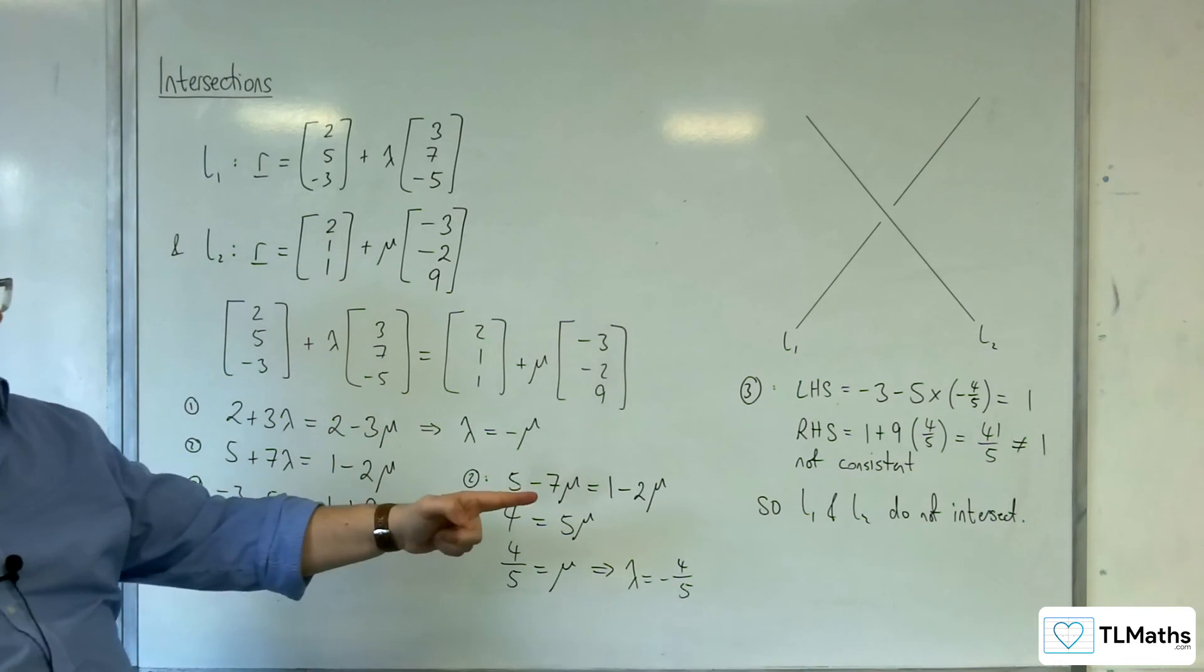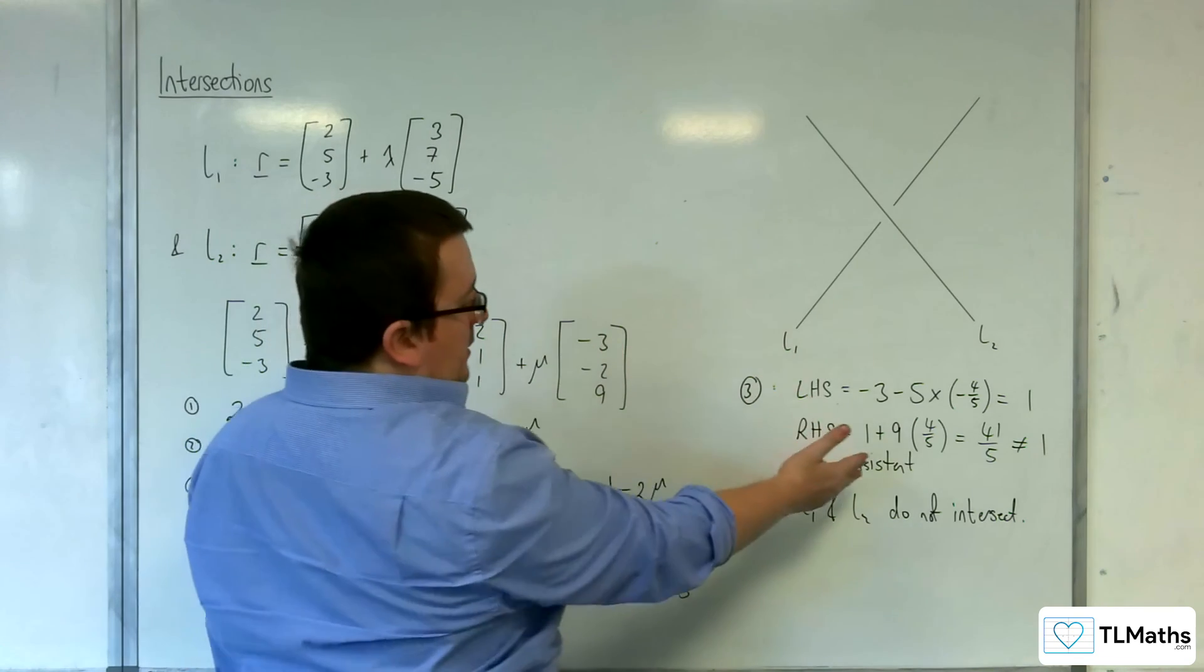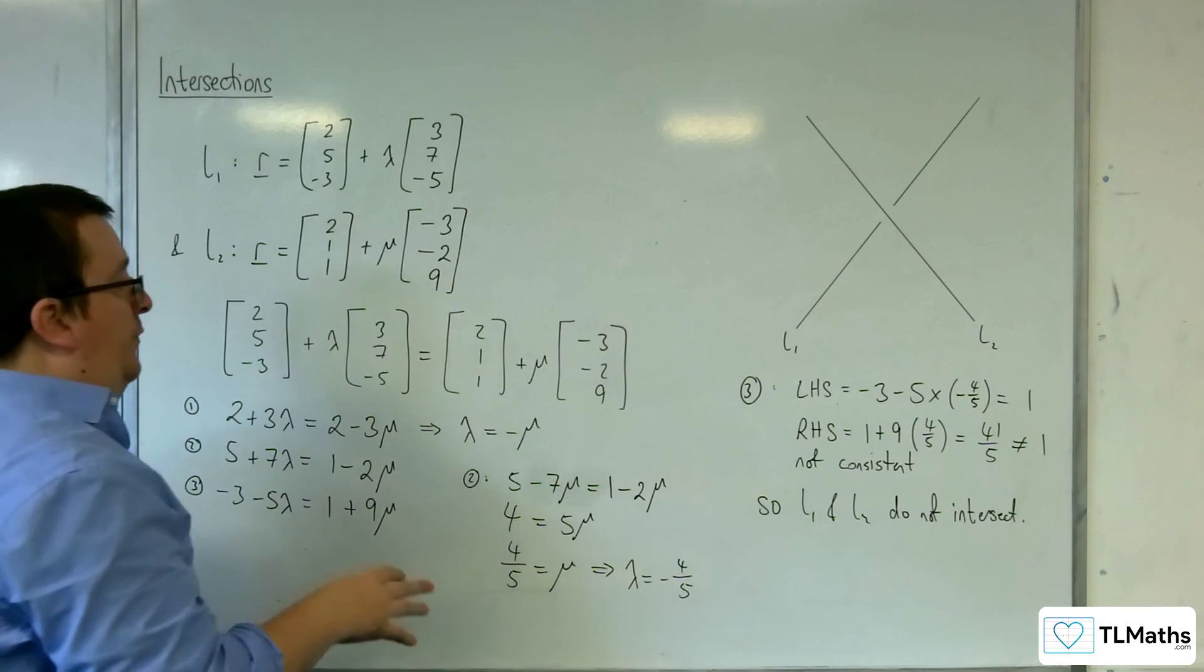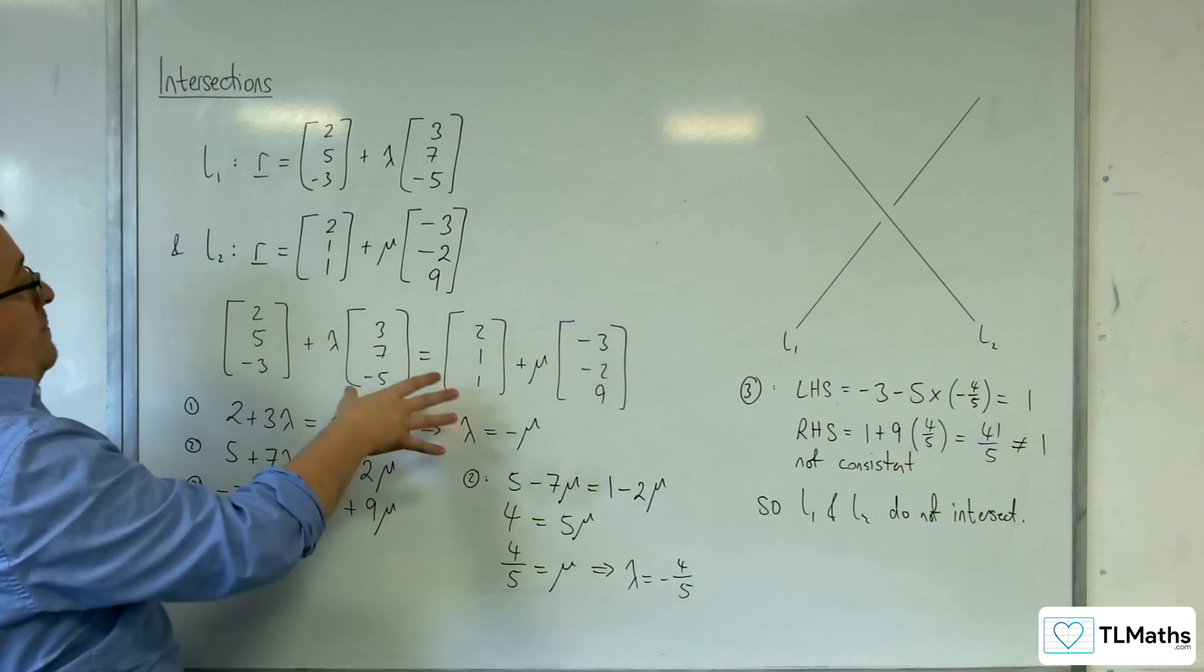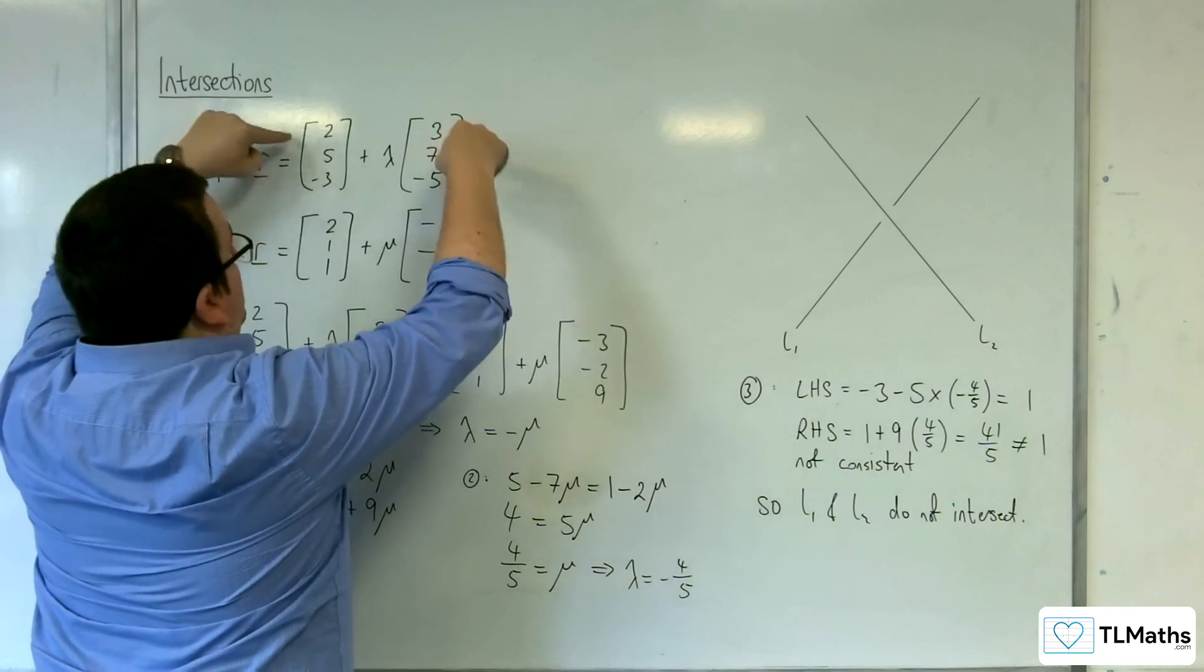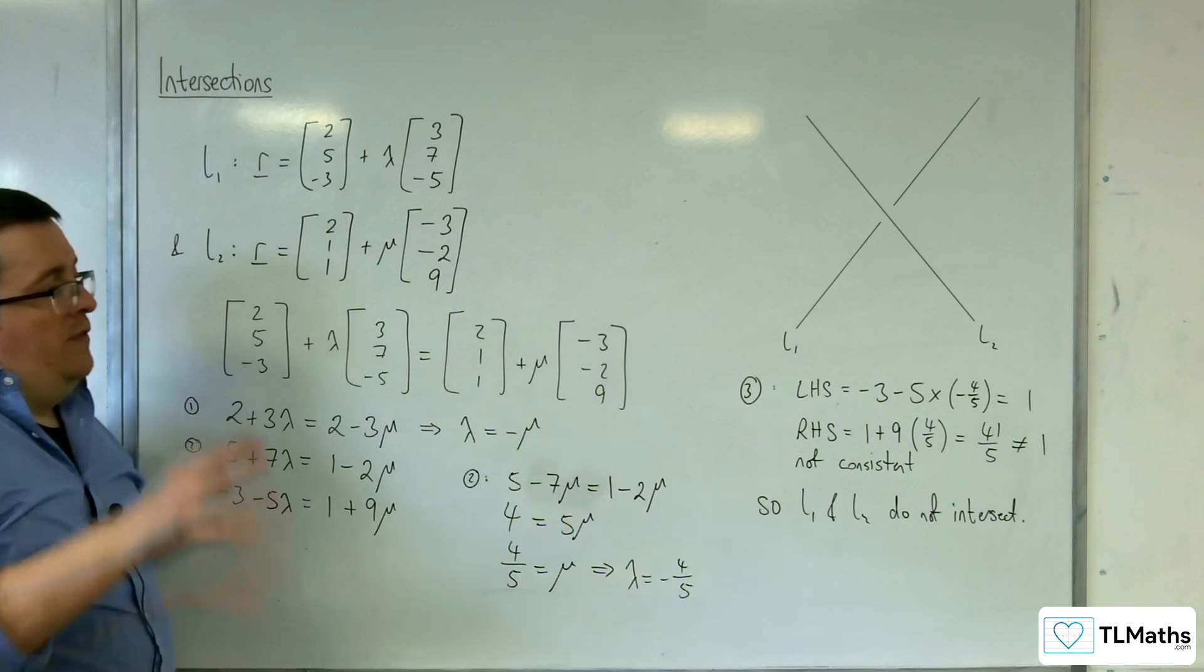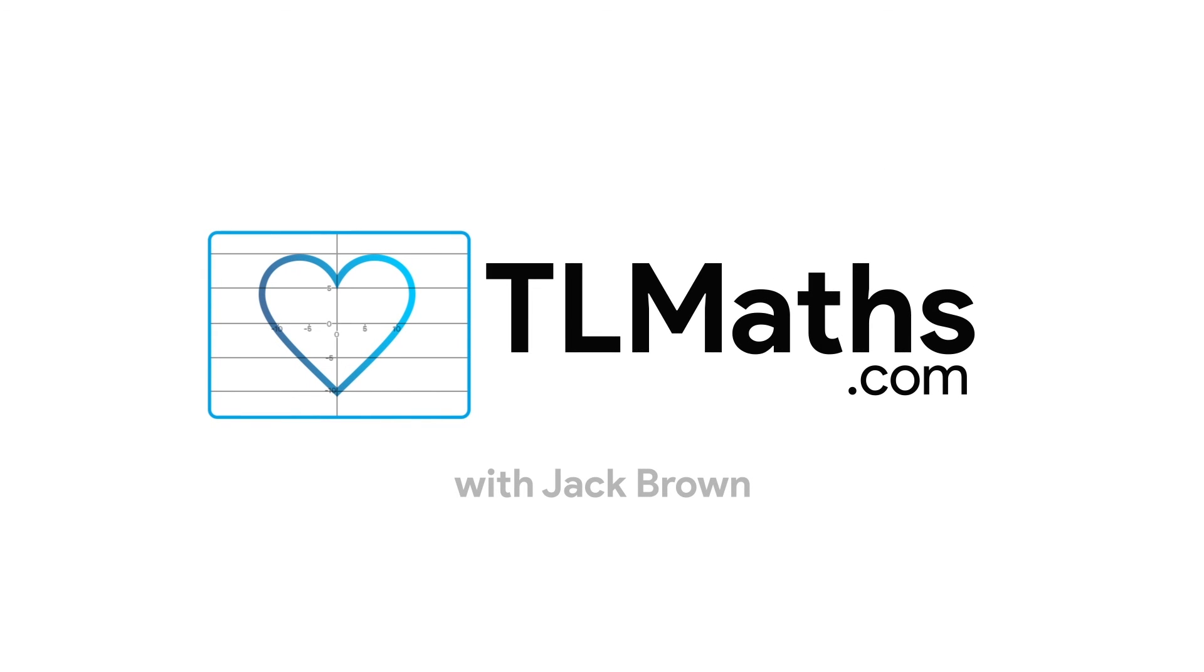Now, if they had worked, if the left-hand side had been equal to the right-hand side, if they had been consistent, which told us that they would intersect, what we can then do is use the lambda and mu, or just either the lambda or the mu, and substitute it into the lambda into that one, or the mu into that one, to work out the coordinates of the point of intersection. And that's the kind of thing that we're going to look at in the next video. Thank you.